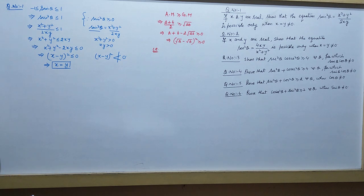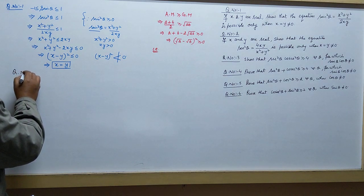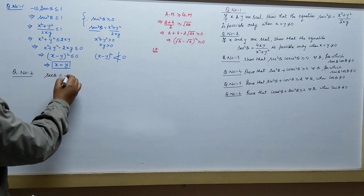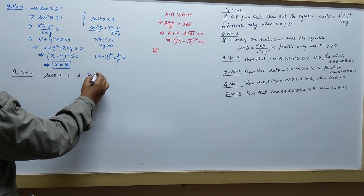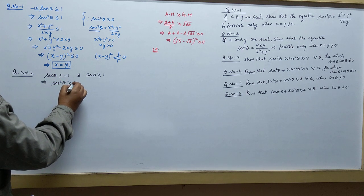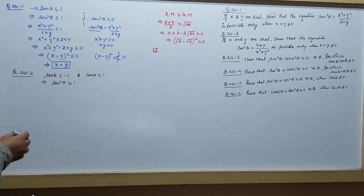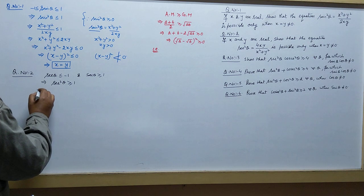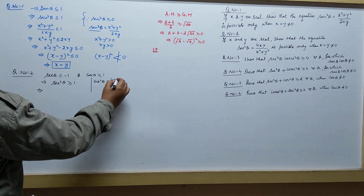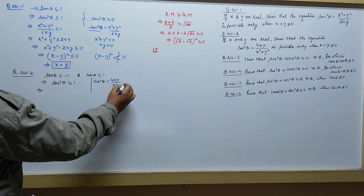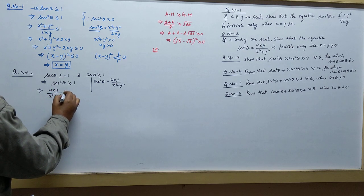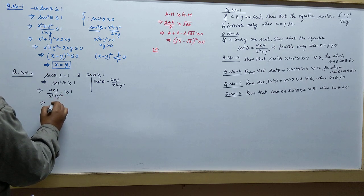Similarly, for question number 2: cosecant theta is always less than or equal to -1 or greater than or equal to 1, and secant theta is always greater than or equal to 1 in magnitude. Secant squared theta is given to be 4xy upon x squared plus y squared, so 4xy upon x squared plus y squared is greater than or equal to 1.